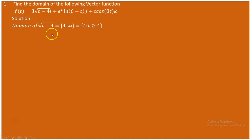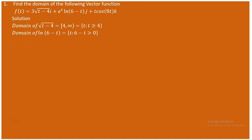For the second component, we consider the domain of ln(6-t). We don't need to worry about e^t since its domain is all real numbers. For ln(6-t), the expression inside must be positive: 6 - t > 0, which gives t < 6. So the domain of this component is (-∞, 6).